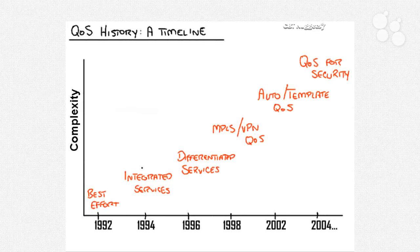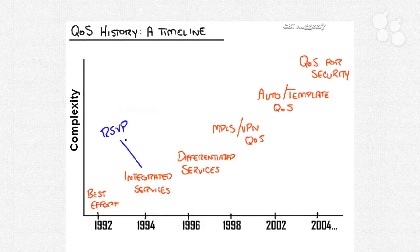That was when the first QoS method was released, known as integrated services. A lot of people know this as RSVP, because that was the only mechanism that came out with integrated services. Just like the name implies, RSVP reserves bandwidth for applications. You would have an application at point A that needed to communicate with a device at point Z, going through five routers in between. RSVP meant that you reserved bandwidth at every router, and you're guaranteed that no matter what, that bandwidth is yours. Integrated services worked great until many applications needed bandwidth, and before long all the bandwidth was reserved and we were back to best effort, because no one was able to get any bandwidth that was left over.